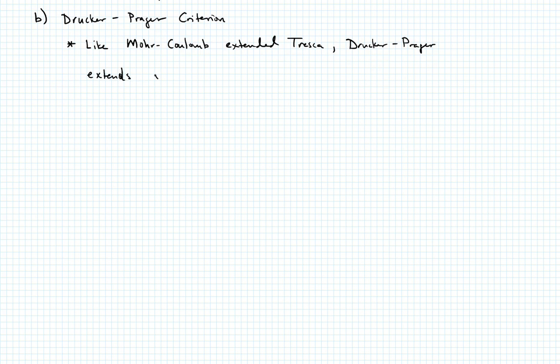The next case, and I'm just going to really quickly go through this, is what's called the Drucker-Prager criterion. Just like the Mohr-Coulomb theory was sort of an extension of the Tresca theory, the Drucker-Prager criterion is an extension of the von Mises failure theory. So like Mohr-Coulomb extended Tresca, the Drucker-Prager extends the von Mises to include hydrostatic effects.